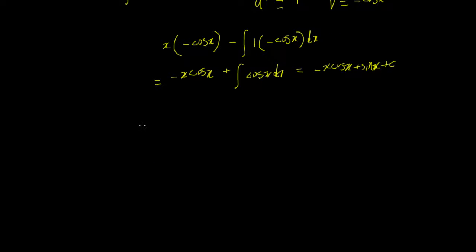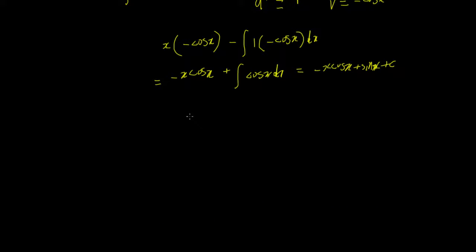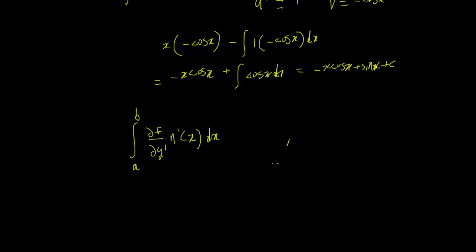Now, what's the point of showing this? The main point is that integration by parts is just a process learned in school, but if you look at what we do in the calculus of variations — for example when we work out the Euler-Lagrange equation — we encounter an integral of the form: integral of (∂f/∂y′) times η′(x) dx.